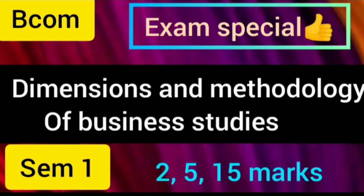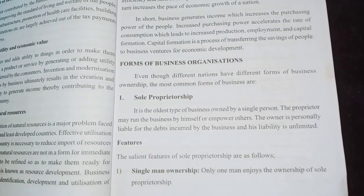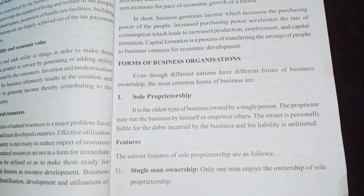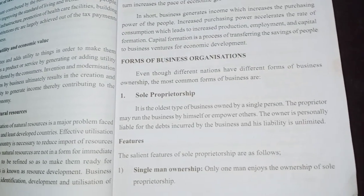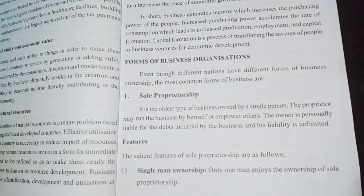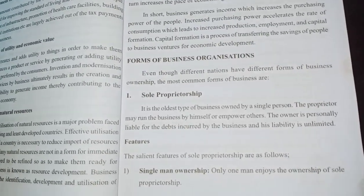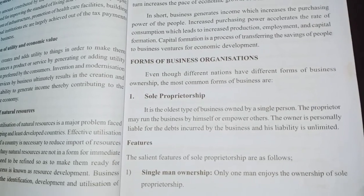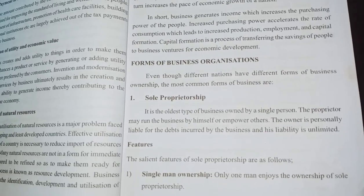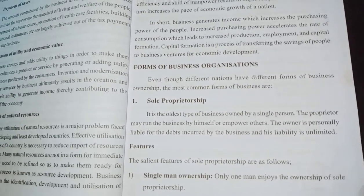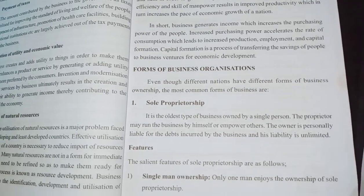Once again, welcome back to Vishwa Teaching. Please subscribe to our channel. Step Forms is a business organization. First, we will learn 5 forms: Sole Proprietorship, HUF, Partnership, Joint Stock Company, and Cooperative Society. These are the 5 forms.